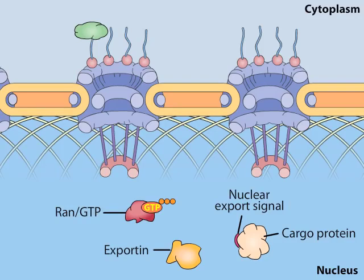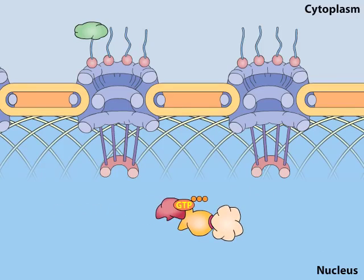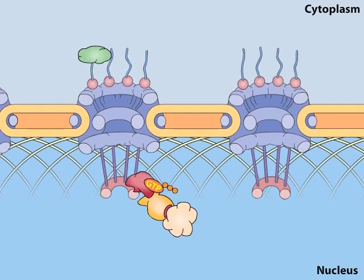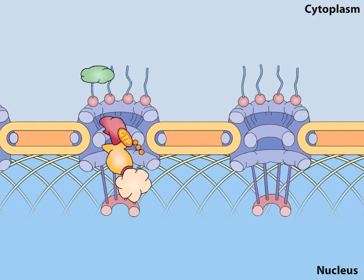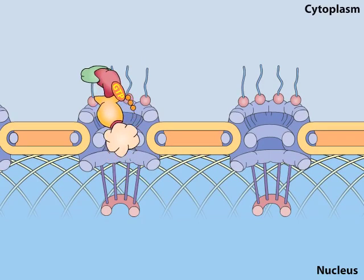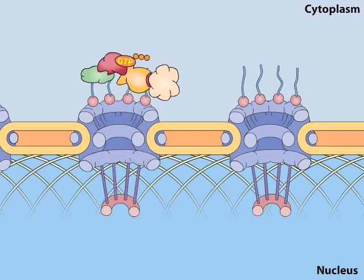RAN-GTP promotes the formation of stable complexes between exportins and their cargo proteins. Note that this same form of RAN does the opposite for importins and their cargos. The effect of RAN-GTP binding on exportins dictates the movement of proteins containing nuclear export signals from the nucleus to the cytoplasm.